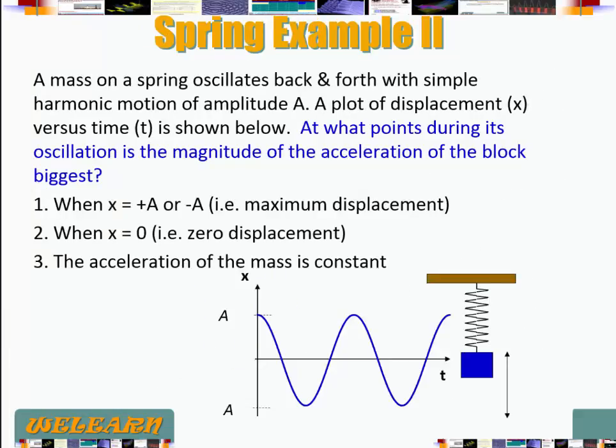Second question. So we have the spring mass system oscillating with an amplitude of A. We have the plot here as shown. And this is asking us at what point during its oscillation is the magnitude of the acceleration of the block biggest.